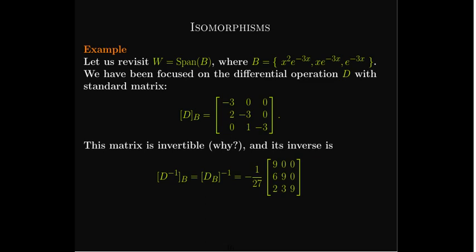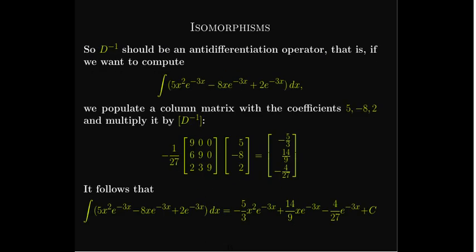We can use technology to calculate the inverse of that matrix. The inverse is the standard matrix — the matrix representation — of the D-inverse operator. Since D is differentiation, undoing differentiation should be anti-differentiation. So if I want to calculate the anti-derivative of a linear combination of functions in the span of B, I can use the matrix representation and multiply it by the corresponding coordinate vector. For example, with coefficients 5, negative 8, and positive 2, the result gives the coefficients on the anti-derivative.